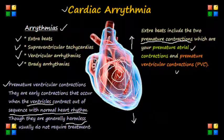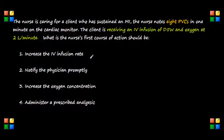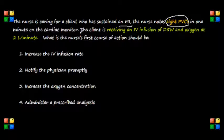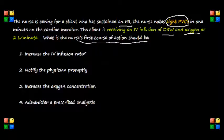A similar question has been asked on the NCLEX exam pertaining to PVCs. The question involves caring for a patient who has sustained an MI, or myocardial infarction, and the nurse notes that eight PVCs are visible in one minute on the cardiac monitor. The client is receiving an IV infusion of D5W and an oxygen level of two liters per minute. The question asks what the nurse's first course of action should be: increase the IV infusion rate, notify the physician promptly, increase the oxygen concentration, or administer a prescribed analgesic.